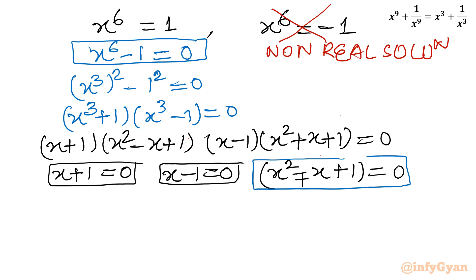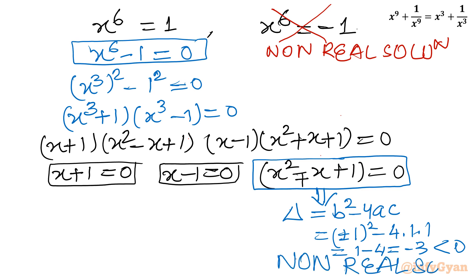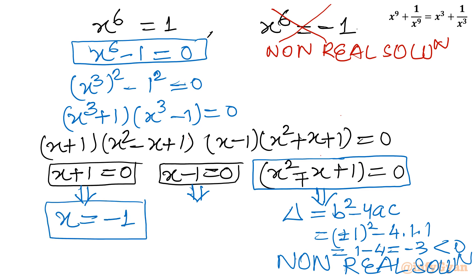Now let's check the discriminant of the quadratic factors. For x² - x + 1: Δ = (-1)² - 4(1)(1) = 1 - 4 = -3, which is negative — non-real solutions, rejected. For x² + x + 1: Δ = (1)² - 4(1)(1) = 1 - 4 = -3, also negative — rejected. So the only real solutions come from x + 1 = 0 and x - 1 = 0, giving x = -1 and x = 1.